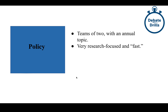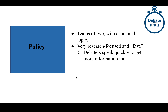Debaters were identifying market inefficiencies that rewarded going faster. Speed literally means teams speaking at 400 to 500 words per minute, just using it to get in more arguments. Policy is the fastest of these events and very research-focused, because you need a lot of research to fill the speech times while going at such high speeds.